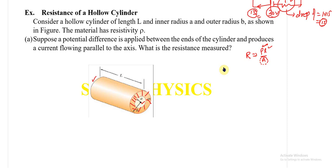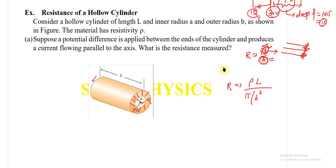Always remember: length is the dimension along which the current moves — the distance the current has to travel. The cross-sectional area is where the current hits while moving. So the resistance becomes ρ × L divided by π(b² − a²), since the cross-sectional area of the hollow cylinder is π(b² − a²).